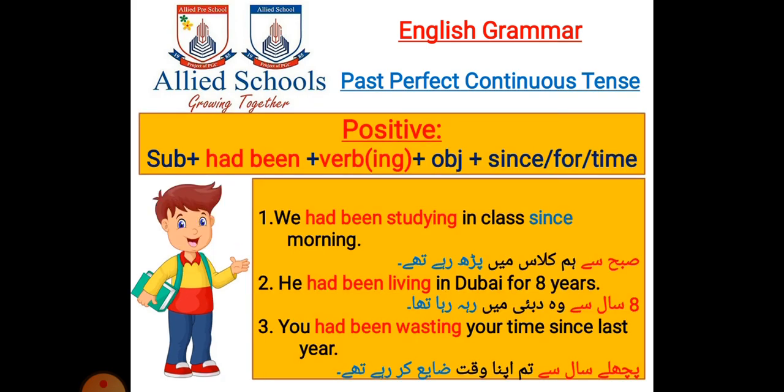The positive structure of Past Perfect Continuous is: subject plus had been plus verb-ing, then object, and after object we use since or for to show time — starting time or total duration. Look at the first sentence: We had been studying in class since morning. We use 'since' here because we have a specific starting time — morning. Subha se hum class mein parh rahe thi.